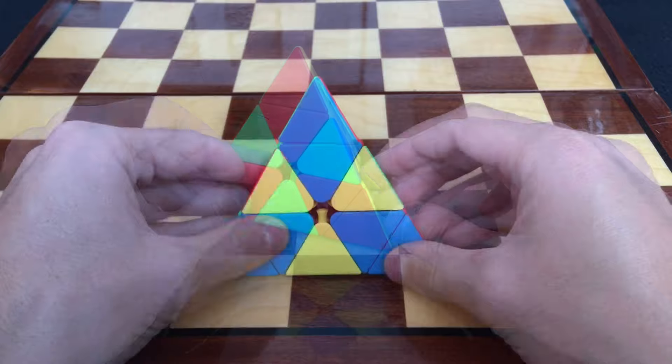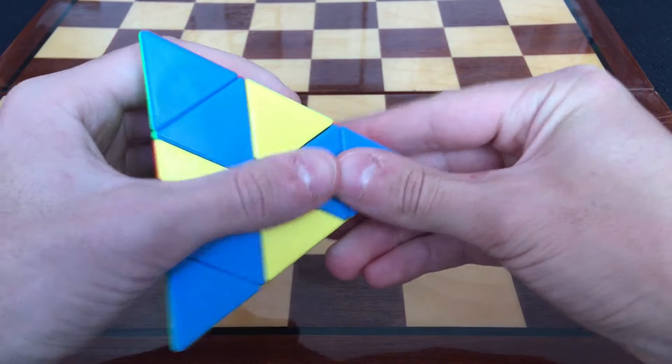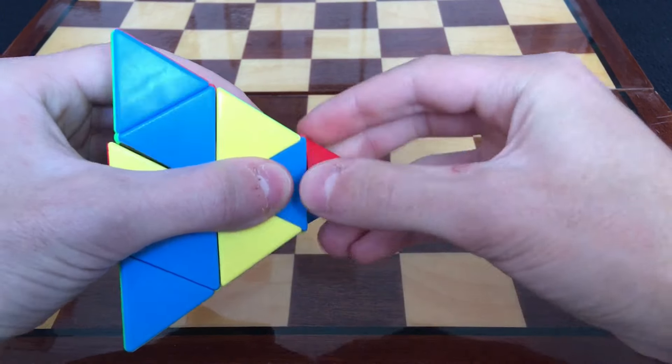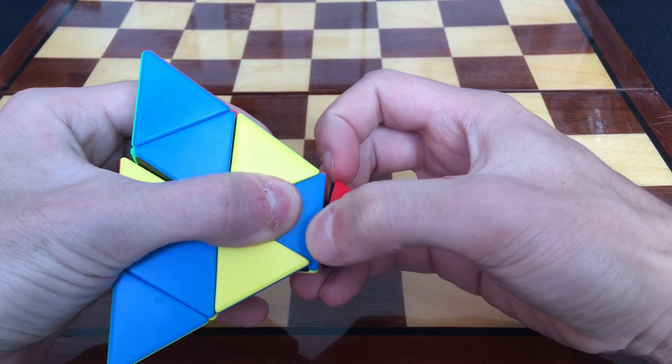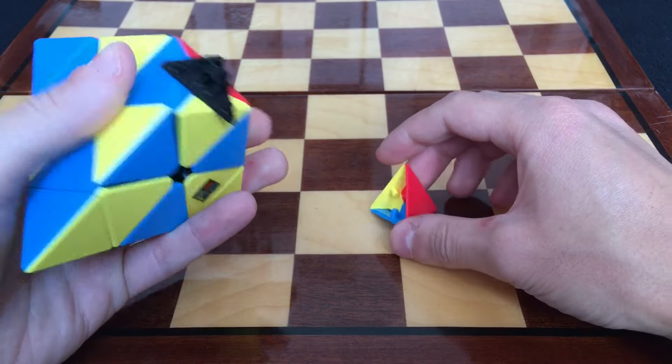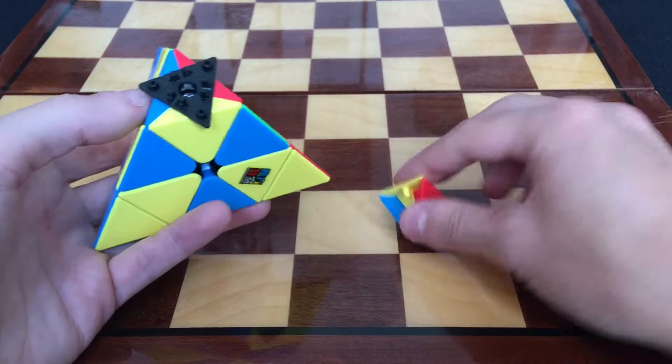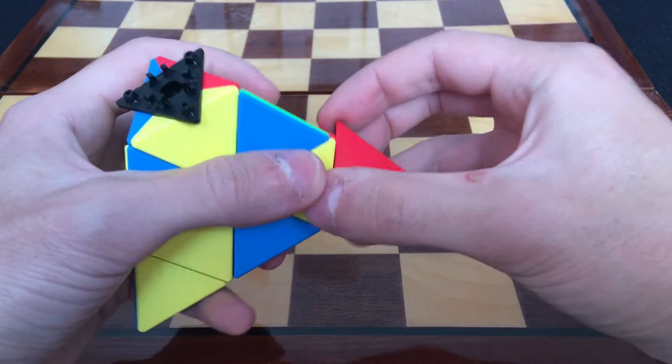Now the only way to do the full checkerboard pattern is to take out the tips like this. It may vary a little bit from pyramid to pyramid. There are pyramids where this whole piece comes out, but this one only the caps come out, so you have to take them all out.